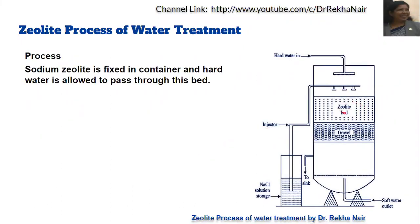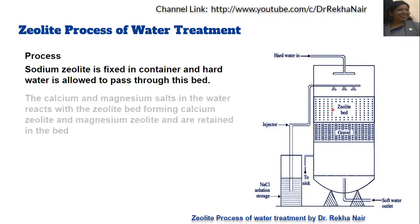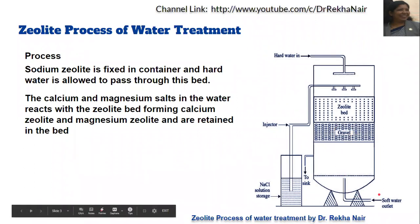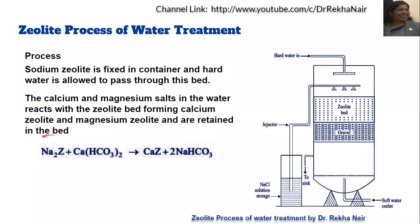The sodium zeolite is fixed in the container and hard water is allowed to pass through this bed. The calcium and magnesium ions — that is, the hardness-producing salts present in the water — will react with the zeolite bed, forming calcium zeolite and magnesium zeolite, which are retained in the bed. The softened water is then filtered through the gravels and drawn out. We have the reactions as: sodium zeolite plus calcium ions present in the hard water — let us take calcium bicarbonate.